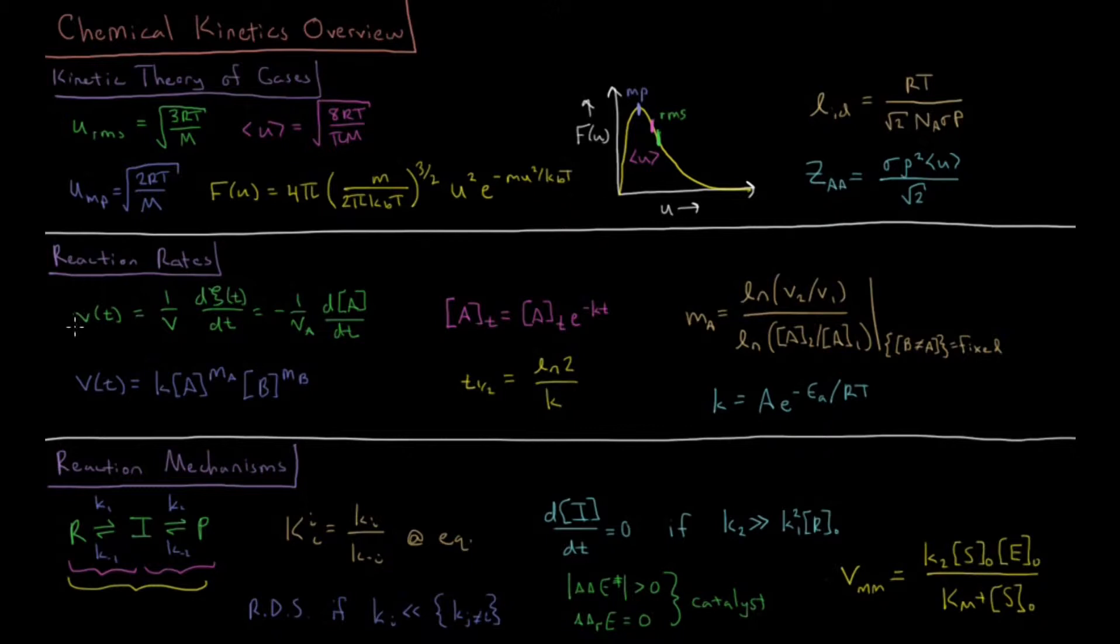In reaction rates we define our reaction rates in terms of 1 over volume times the change of extent of reaction over time which is also equal to more obtainable quantities like minus 1 over stoichiometric coefficient of a reactant times the change in the molarity of that reactant over time, change of its concentration over time.